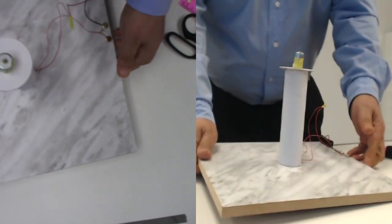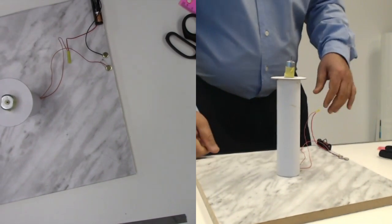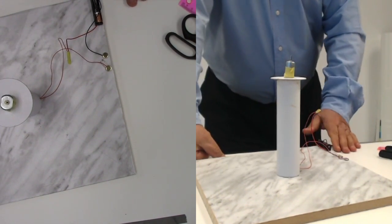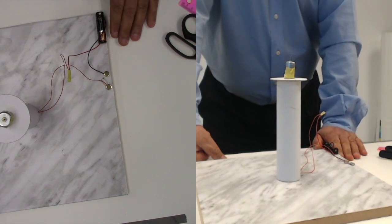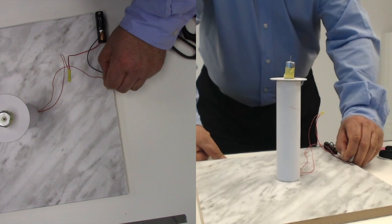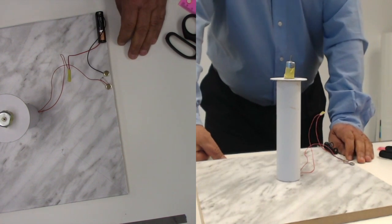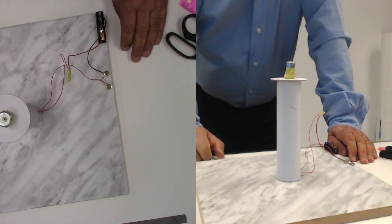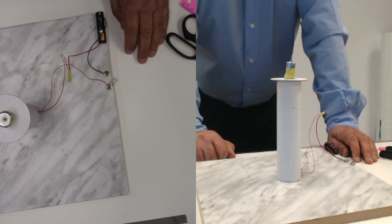Now before we go on, we are going to make sure that the motor and the battery are working. It is working. So this is now a closed circuit. So this is the second part of your project.